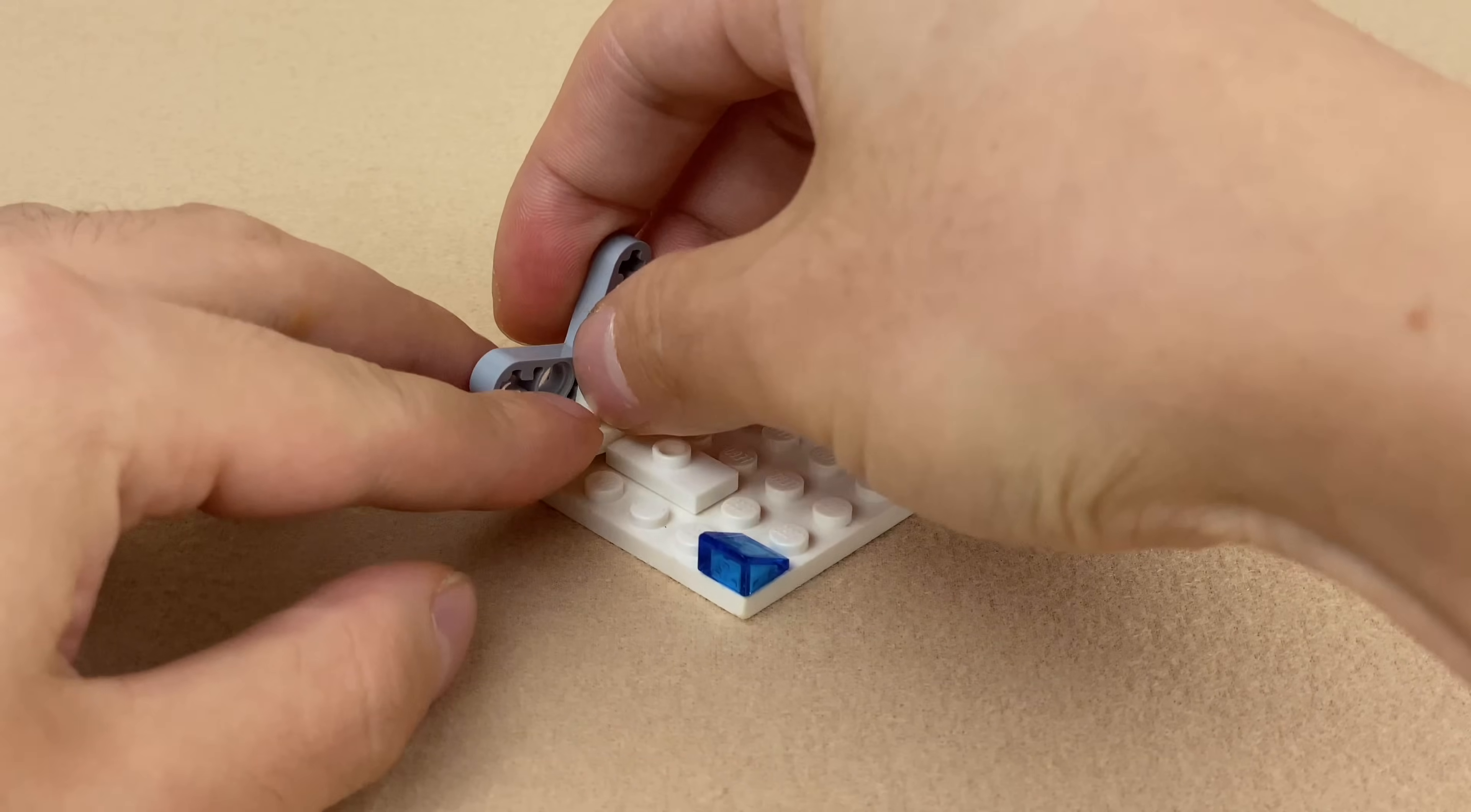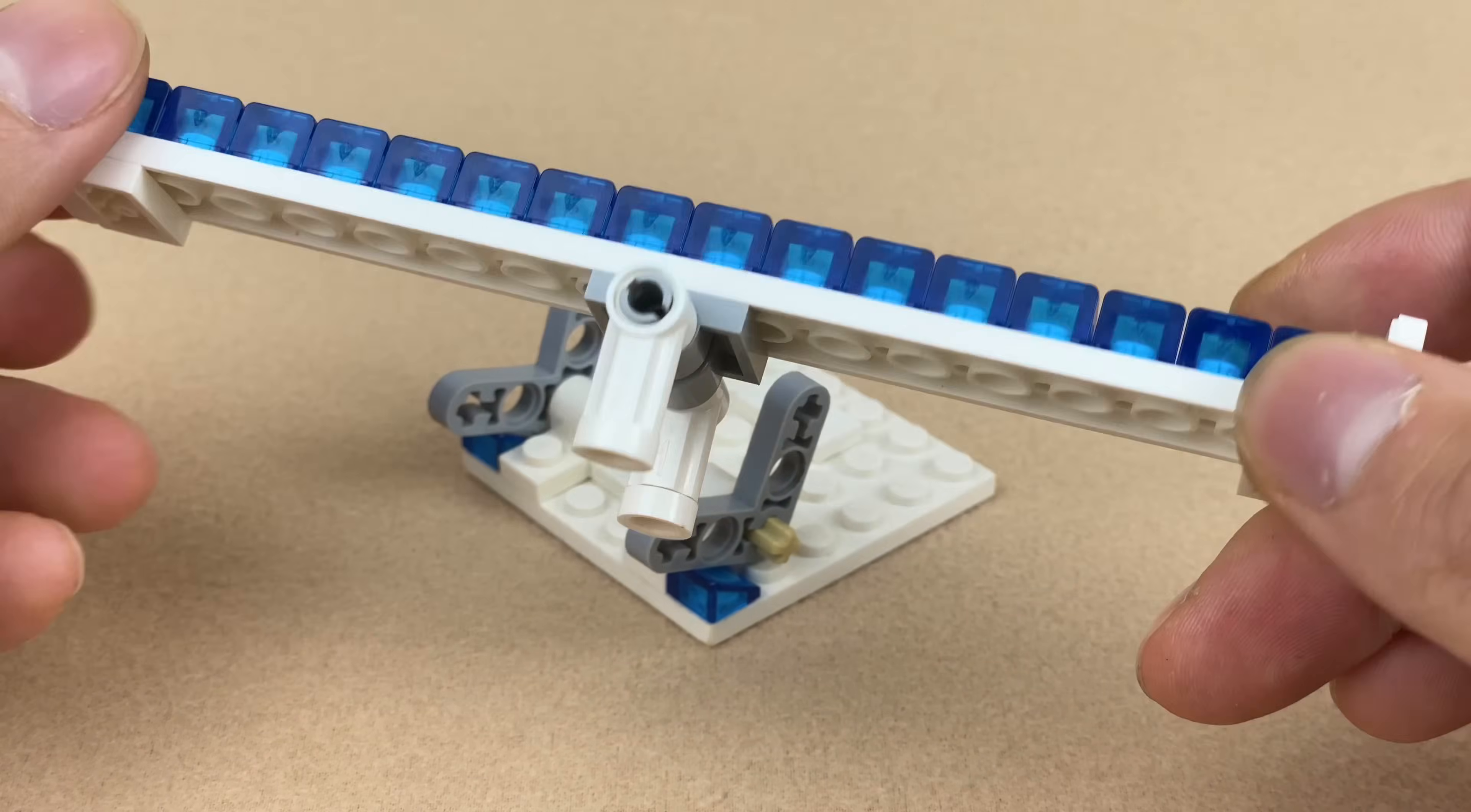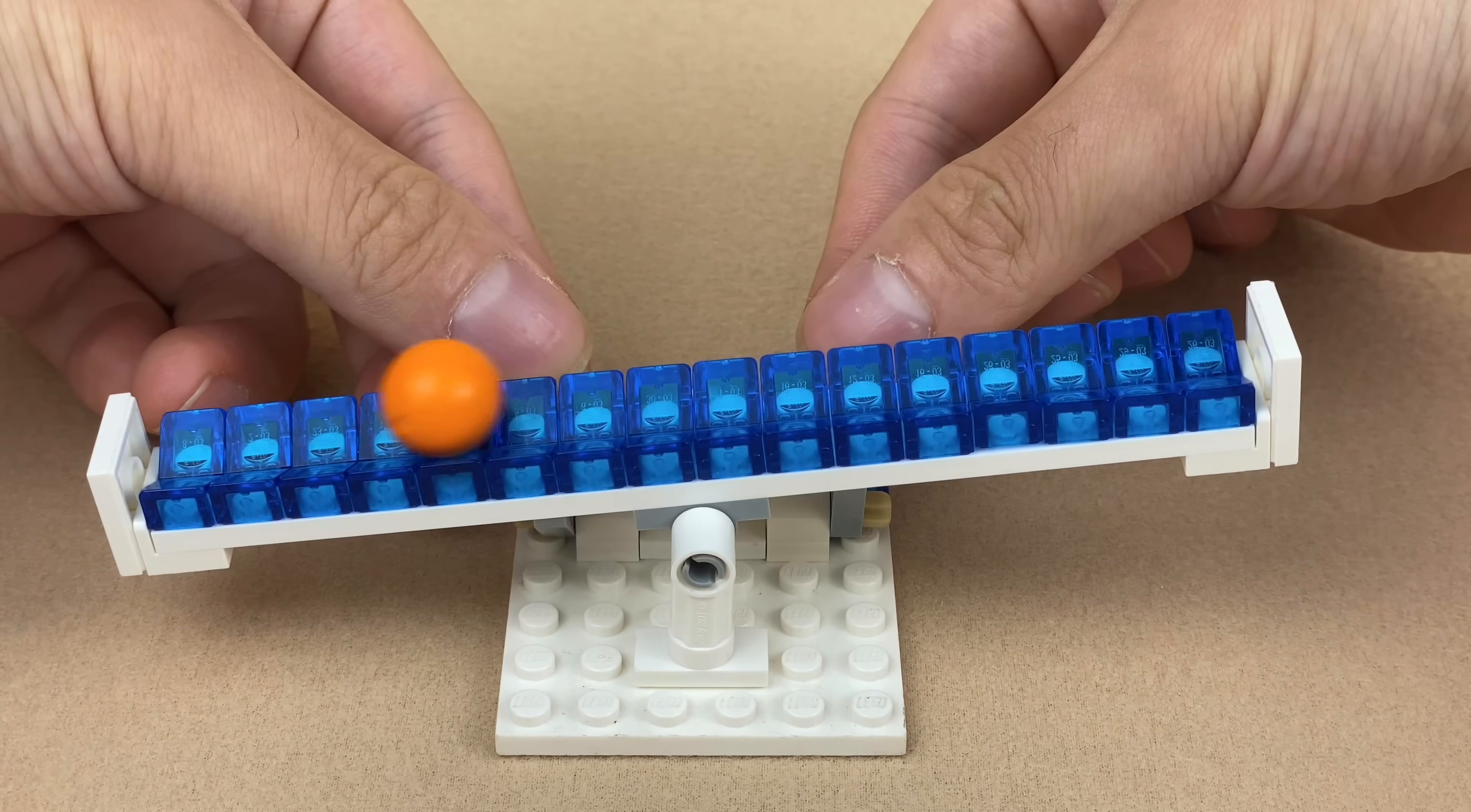Additionally, cheese slopes make excellent tracks for LEGO balls. Construct a simple contraption of a seesaw. Place the ball on the track and roll it left and right by pressing a button. A satisfying experience.